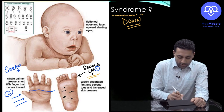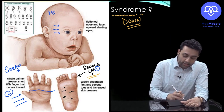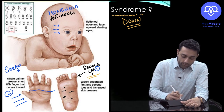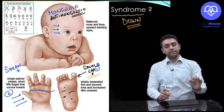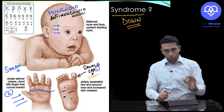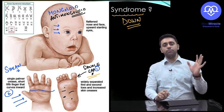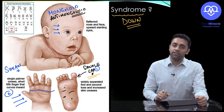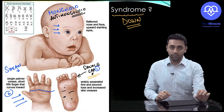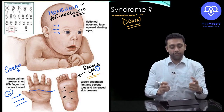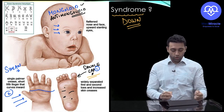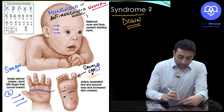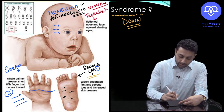There is something known as mongoloid slant and anti-mongoloid slant. Mongoloid slant is upward displacement of the eyes, while anti-mongoloid slant is downward displacement of the eyes. PG entrance question: in Down syndrome, do you see mongoloid slant or anti-mongoloid slant? We see mongoloid slant — upward displacement of the eyes. Syndromes with anti-mongoloid slant include Noonan syndrome and Treacher Collins syndrome.